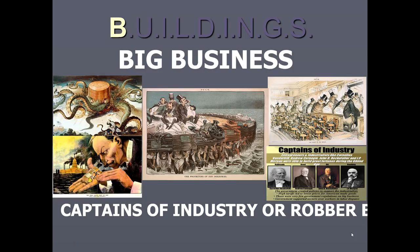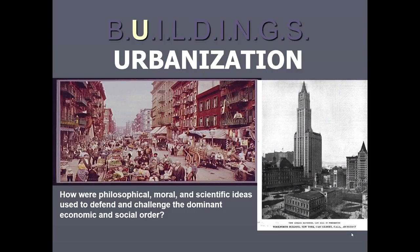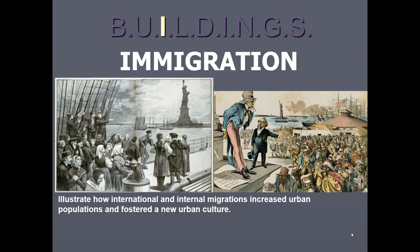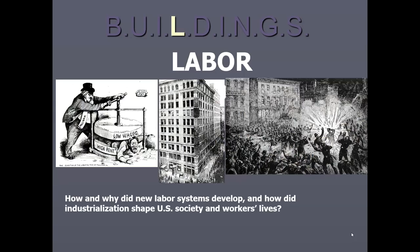The B in BUILDINGS is for big business, where you have to distinguish between captains of industry and robber barons. The U is for urbanization and the growth of cities, how immigrants flock to cities looking for work — a lot of trade and manufacturing coming from major cities, especially in the Northeast. The I is for immigration — a new group of immigrants moving into the United States from Southern Europe, Eastern Europe, and Asia. Eastern Europeans are processed through Ellis Island; Asians through Angel Island in San Francisco. This is also a time when workers began to protest and speak out for better working conditions and pay.